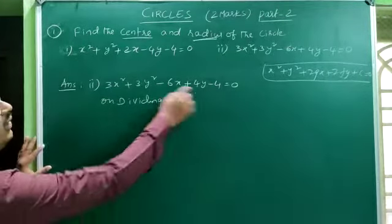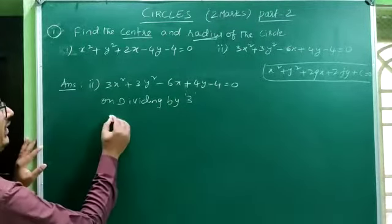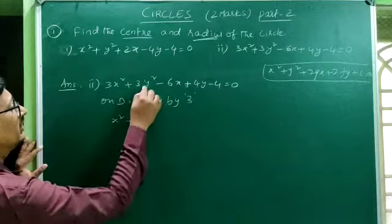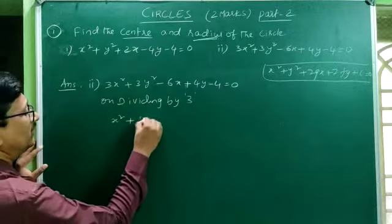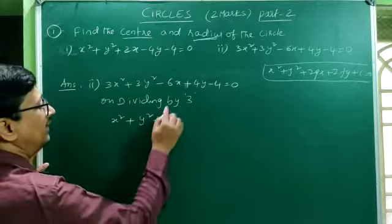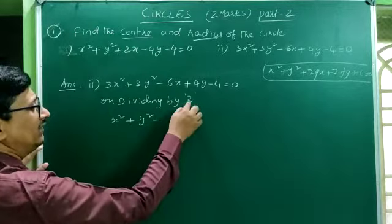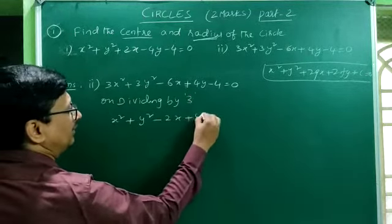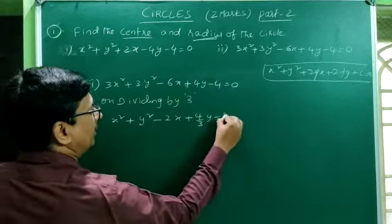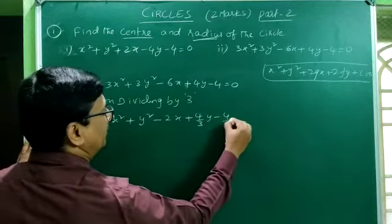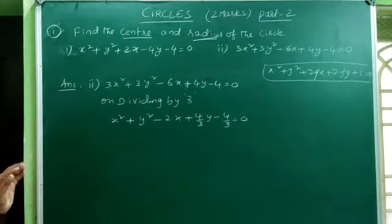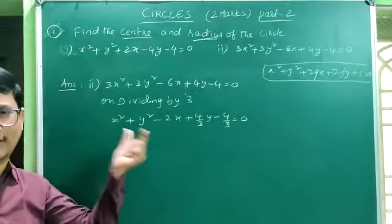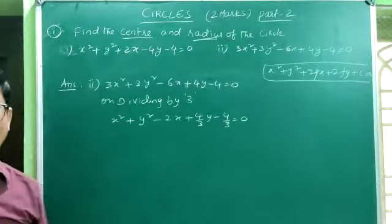Dividing the equation by 3: 3x²/3 + 3y²/3 − 6x/3 + (4/3)y − 4/3 = 0, which gives x² + y² − 2x + (4/3)y − 4/3 = 0. This is now in the general form of the circle equation.